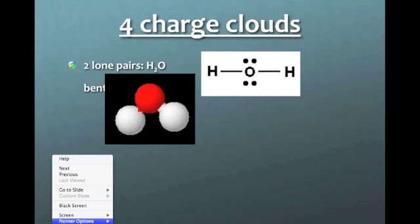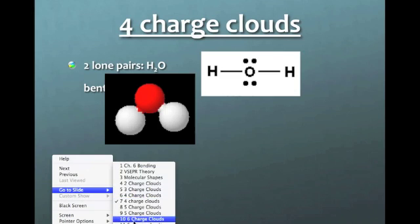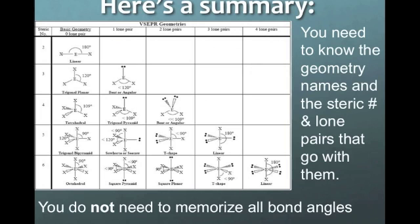Now for time purposes, I actually am going to fast forward to the lovely summary table. I love this table because it puts everything in a nice, neat picture and it shows the relationships of the charge clouds to the different shapes with their lone pairs. So this one, instead of using the term charge cloud, they use the term steric number, but that's the same thing. This means charge cloud.